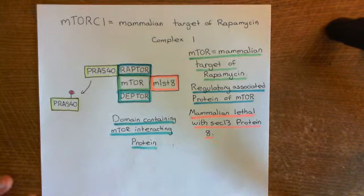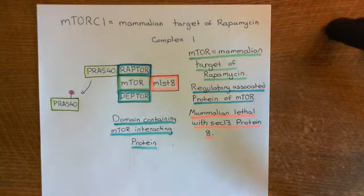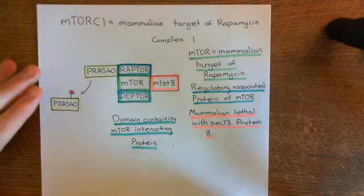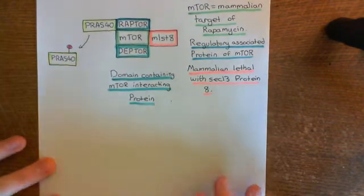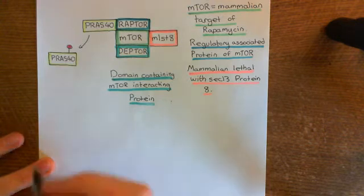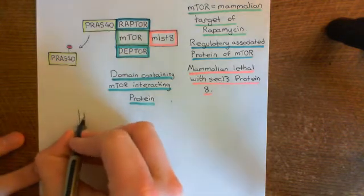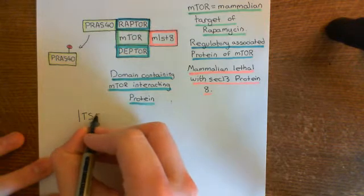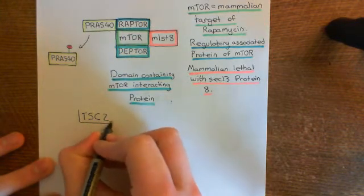Next, what AKT is going to do is lead to the activation of something known as the REB-GTP protein. AKT is going to phosphorylate a protein known as the tuberous sclerosis complex protein 2, known as TSC2.